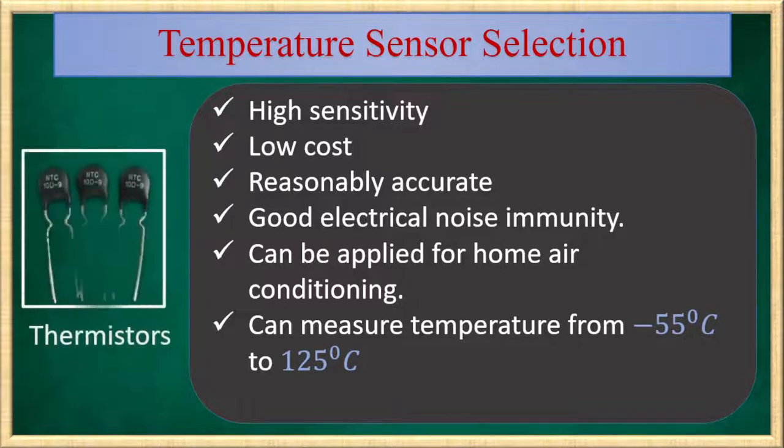From the four commonly used temperature sensors, thermistors can go well for this application. To know the detailed characteristics of each of the four temperature sensors, you can watch our first episode by clicking right above here. So thermistors can measure a temperature range from minus 55 degrees centigrade to 125 degrees centigrade. And our application lies under this temperature range.